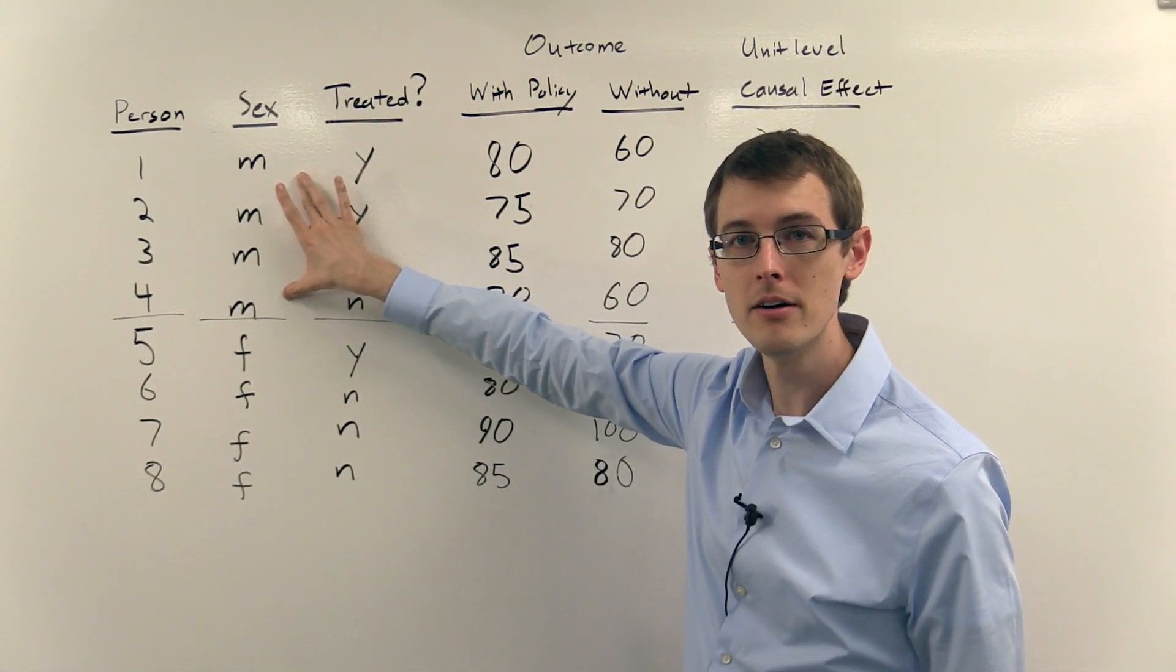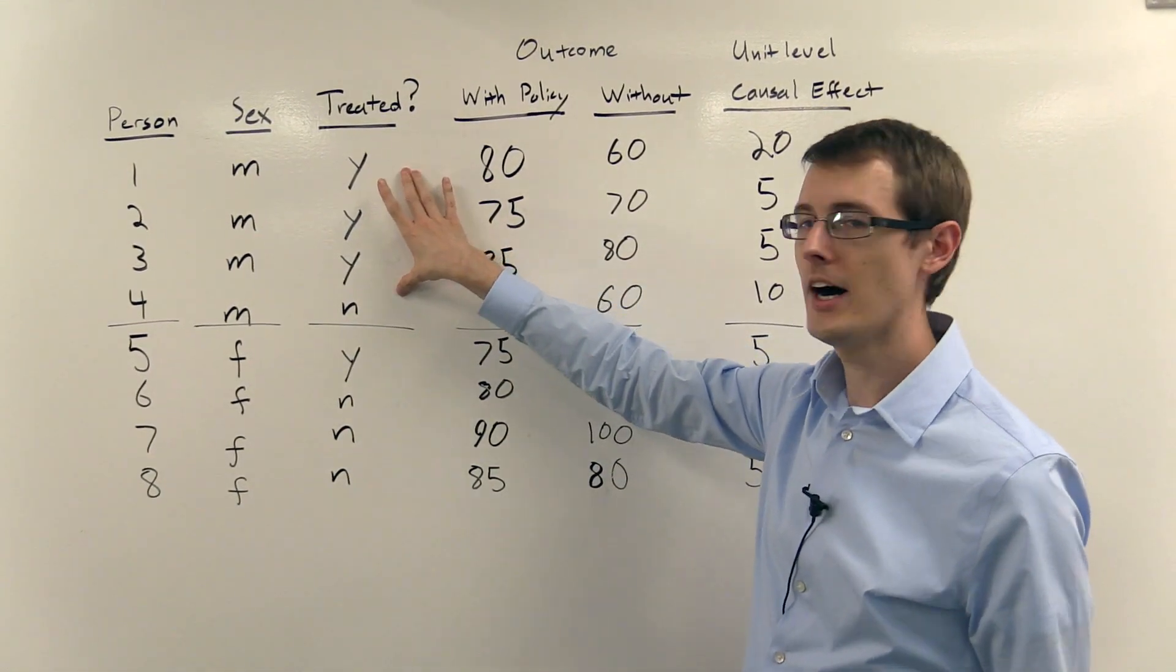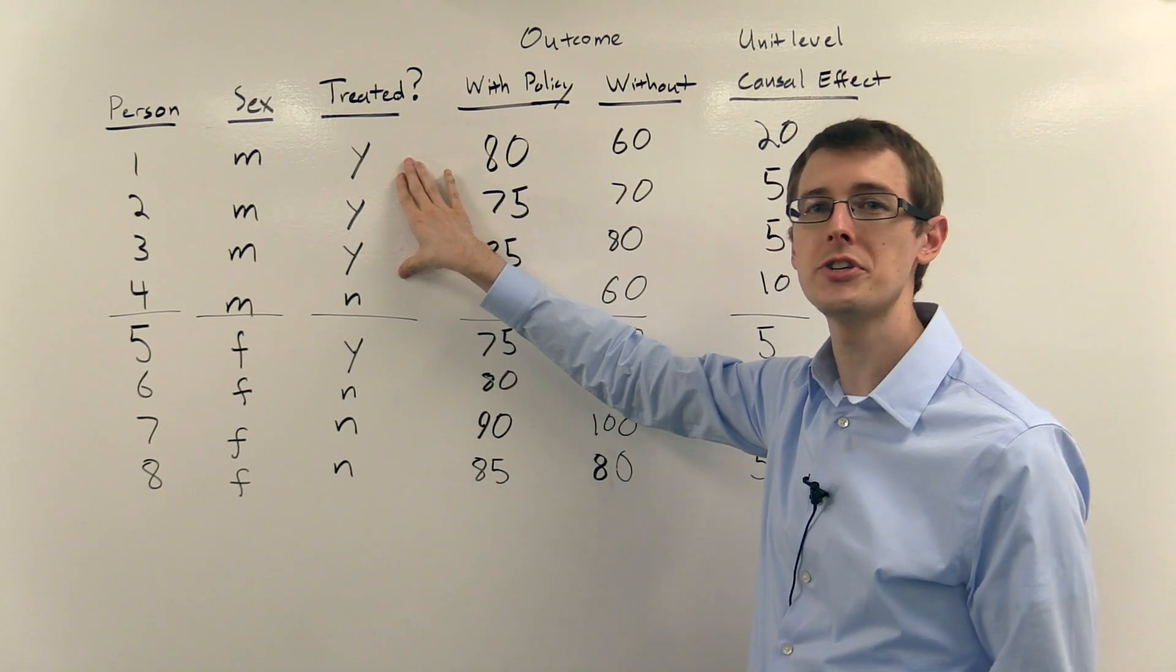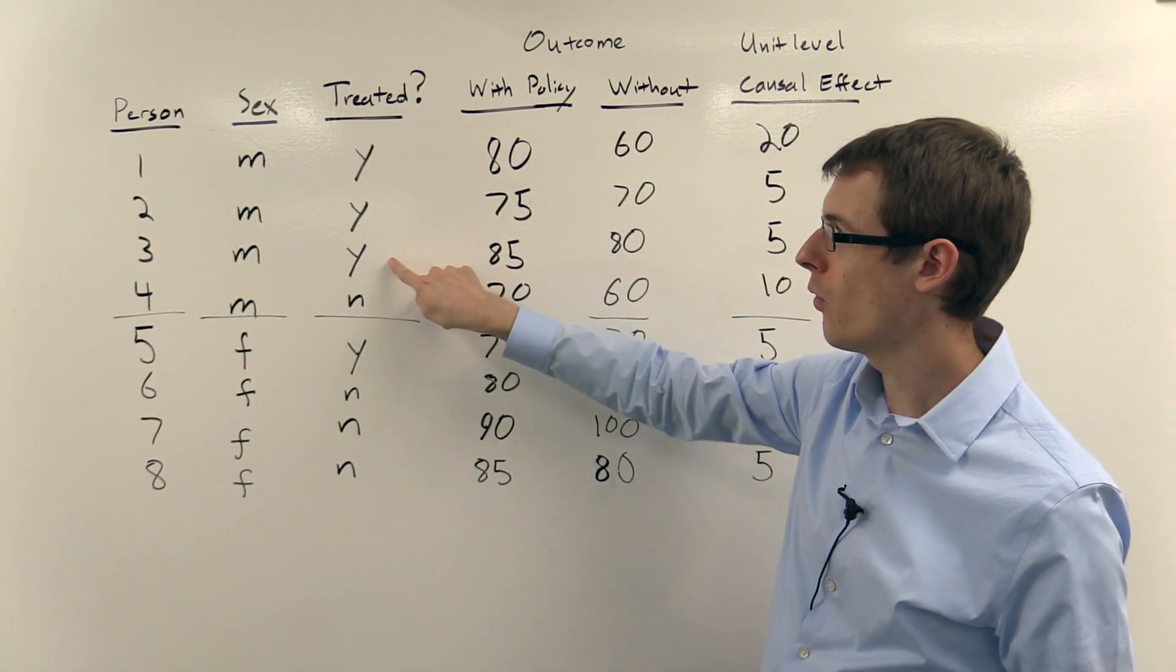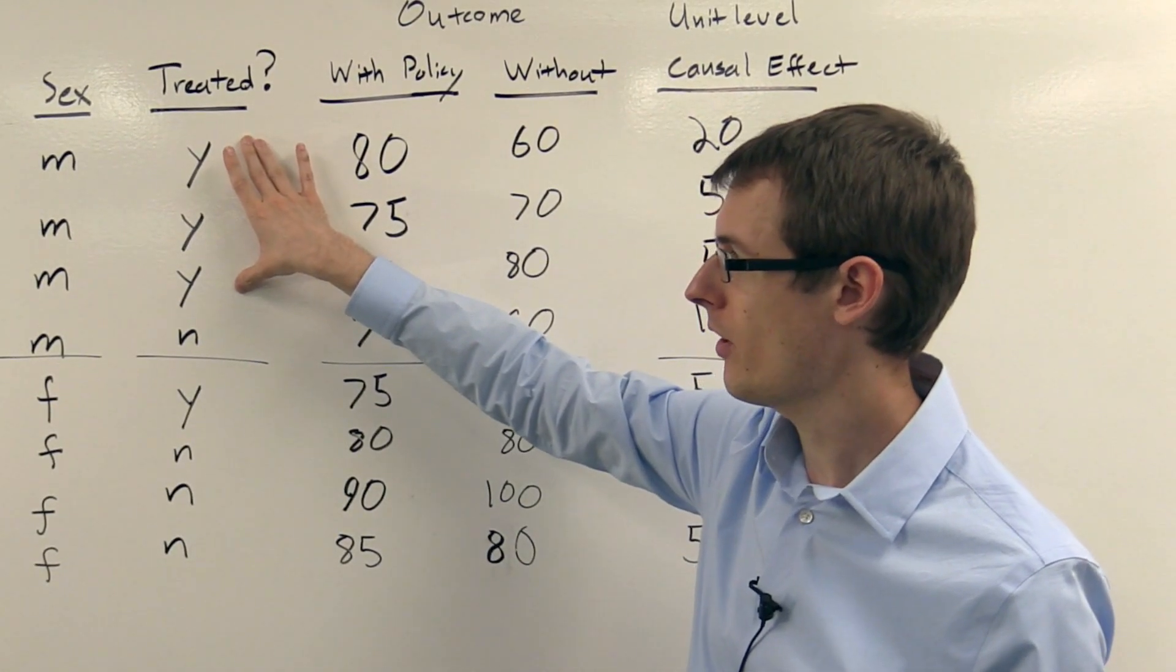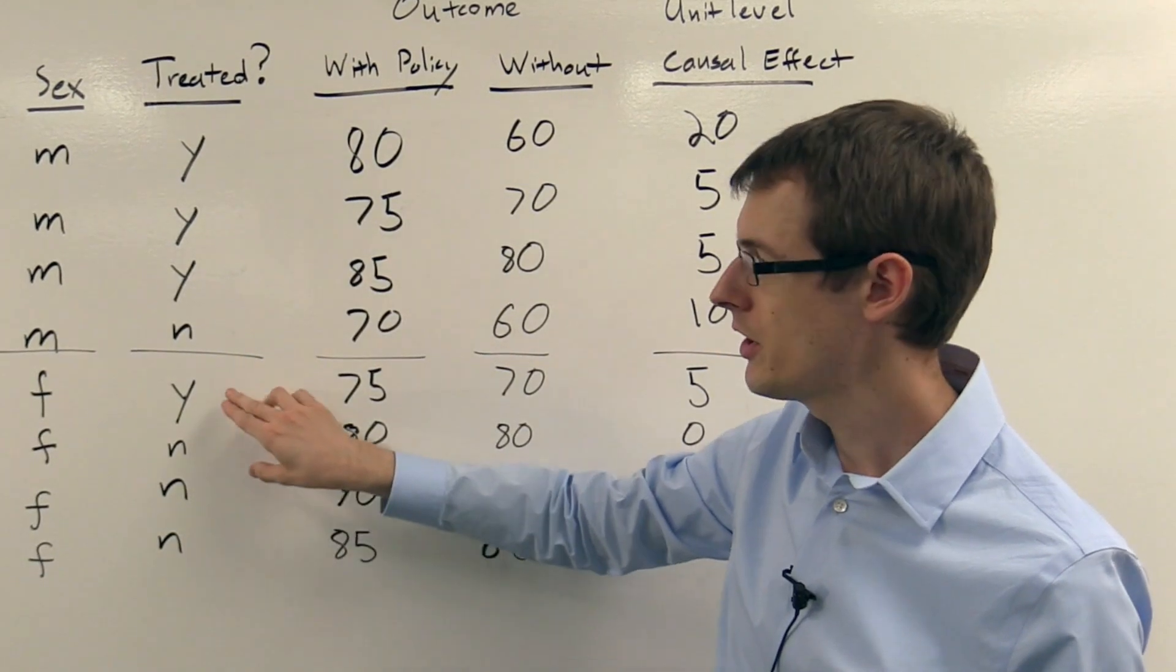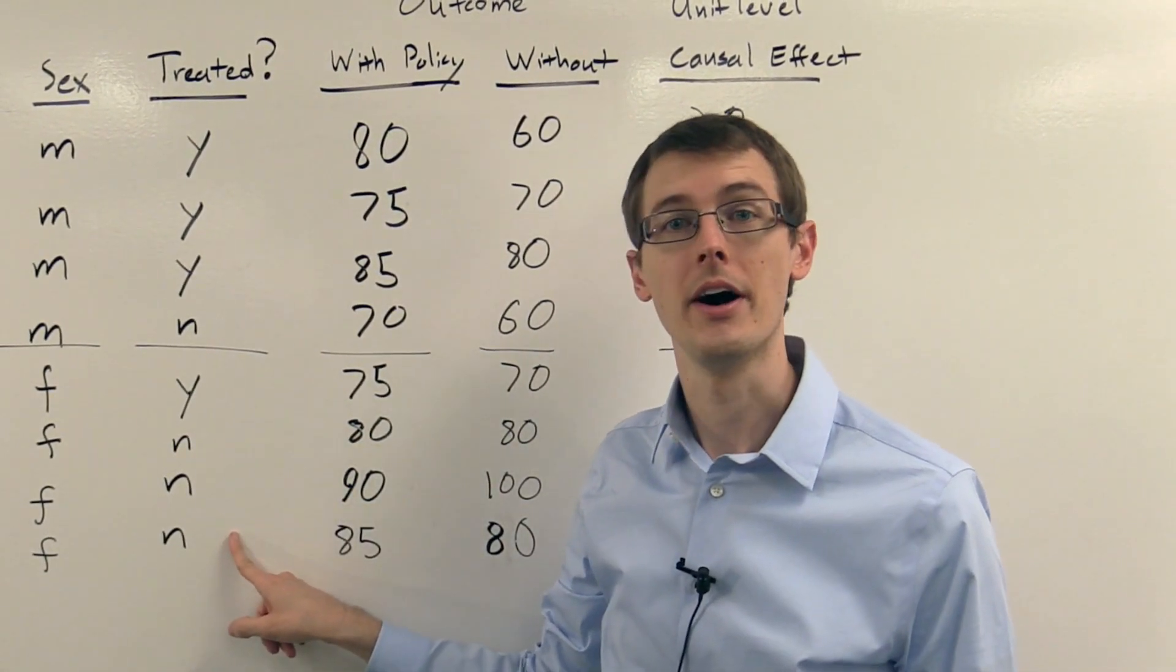Four of these people are male and four of them are female. And over here I've got a column telling me in my data was this person treated, yes, or not treated, no. So the first three people are treated, the fourth person is not. And for the females the first person is treated and the other three people are not.